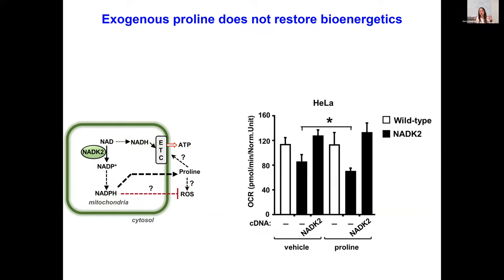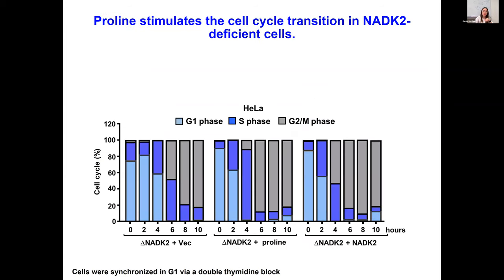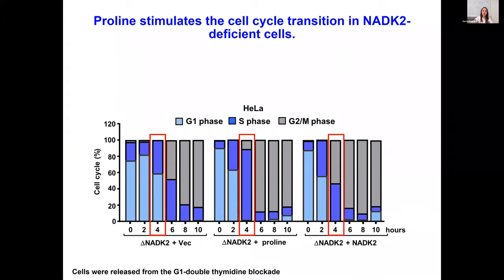Given that most of our phenotypes relate to cell proliferation, we looked more closely at cell cycle. We synchronized cells in G1 by a double thymidine block, then released NADK2-deficient cells either in the presence or absence of proline. Within four hours of removing the thymidine blockade, we observed that while NADK2-deficient cells are about 50% still in G1, in the presence of proline, about 90% of the cells are in S phase or have passed through to G2/M. This suggests there is a general delay in cell cycle in NADK2-deficient cells that can be restored by proline.